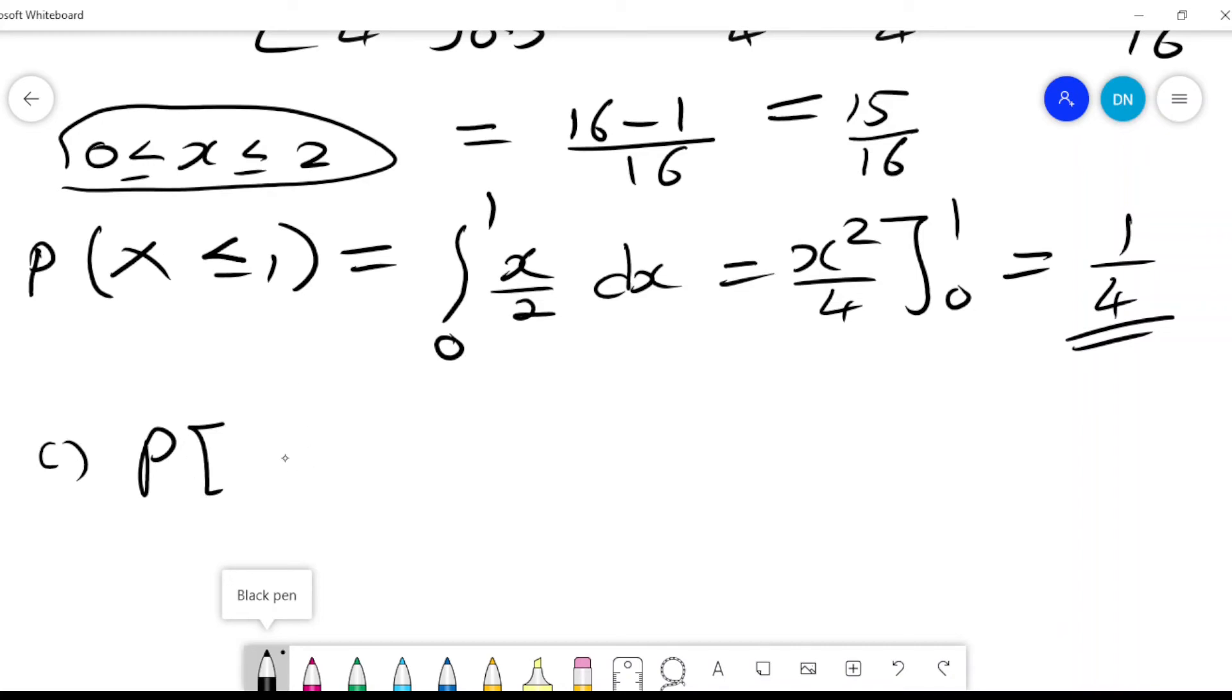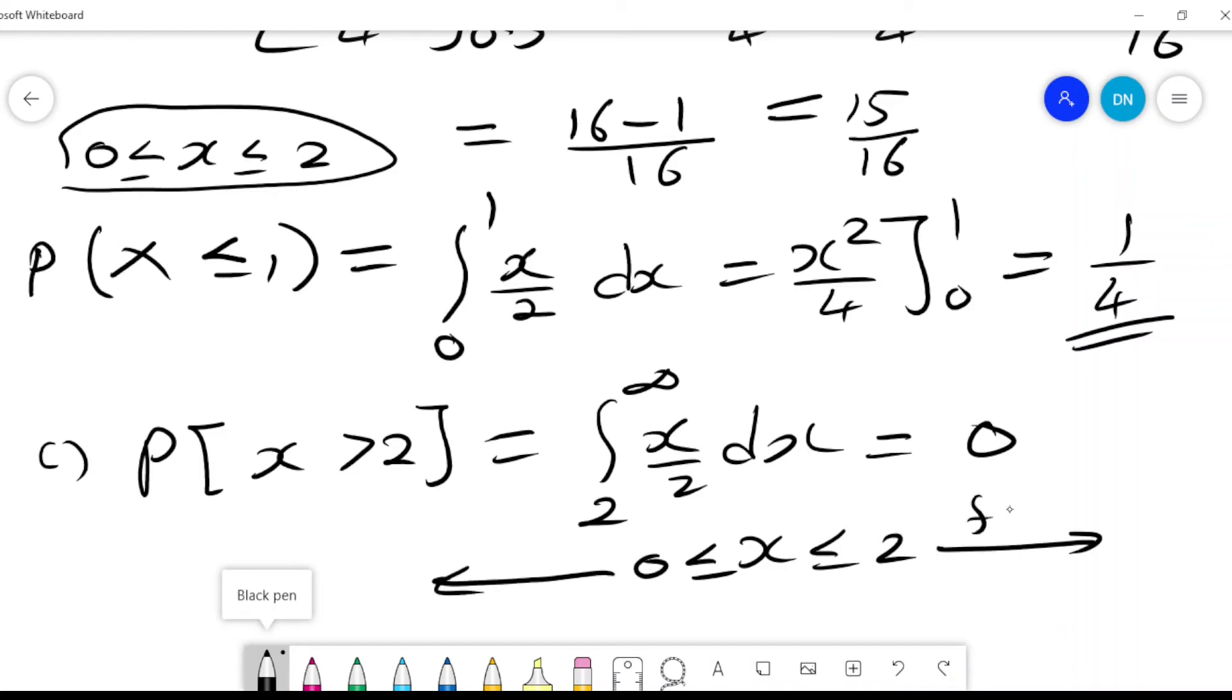Probability X is greater than 2. It will be the integral from 2 to infinity of x over 2 dx, and this is 0. Why? Because X lies between 0 and 2. Any value below 0 and any value above 2, f(x) will be equals to 0. So that's why we can automatically indicate that to be equals to 0.